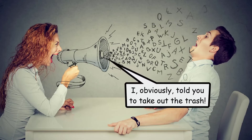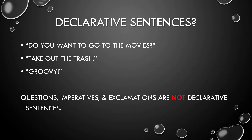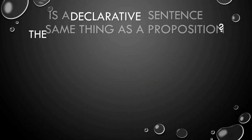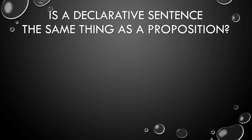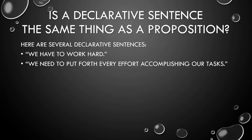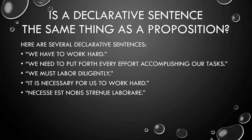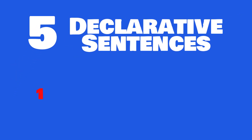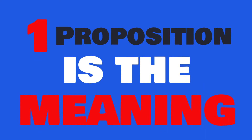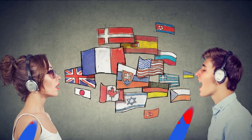An exception could be a rhetorical question, which functions like a statement: 'Didn't I tell you to take out the trash?' effectively means 'I obviously told you to take out the trash.' And exclamations can be used while making claims, like 'That was an awesome movie' — since people can clearly disagree, it must have a truth value, even if it's a subjective claim. Now consider these five different declarative sentences: 'We have to work hard,' 'We need to put forth every effort accomplishing our tasks,' 'We must labor diligently,' 'It is necessary for us to work hard,' and the Latin 'Necesse nobis est enixe elaborare.' These are five different declarative sentences — but there's only one proposition, because a proposition is the meaning of a declarative sentence.